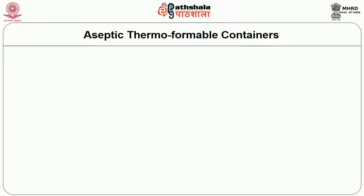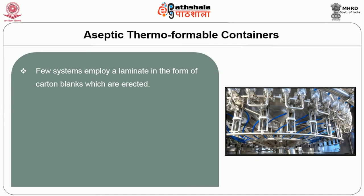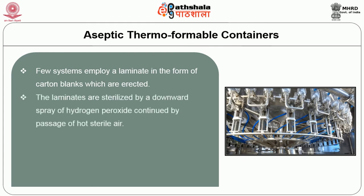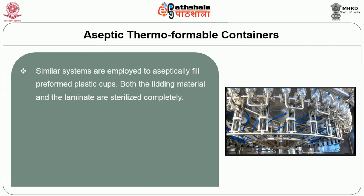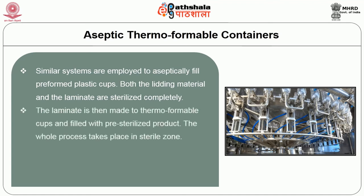Aseptic thermoformable containers are also one type of aseptic packaging. Some systems employ a laminate in the form of carton blanks which are erected. The laminates are sterilized by a downward spray of hydrogen peroxide followed by a passage of hot sterile air, ensuring complete sterilization and removal of residual hydrogen peroxide. The cartons are filled with pre-sterilized product and then sealed. Similar systems are employed to aseptically fill pre-formed plastic cups, where both the lidding material and the laminates are sterilized completely. The laminate is then thermoformed into cups and filled with pre-sterilized product, and the whole process takes place in a sterile zone.